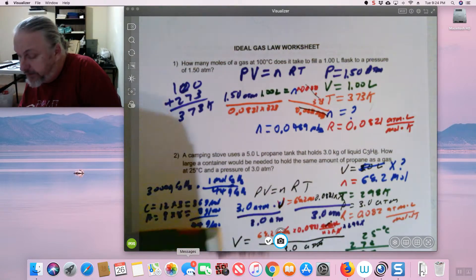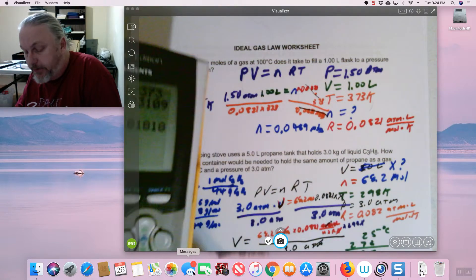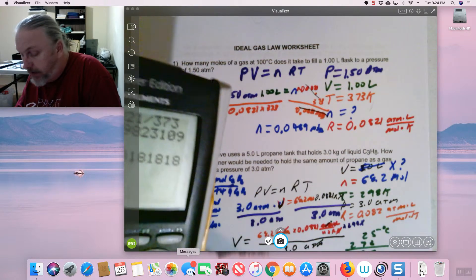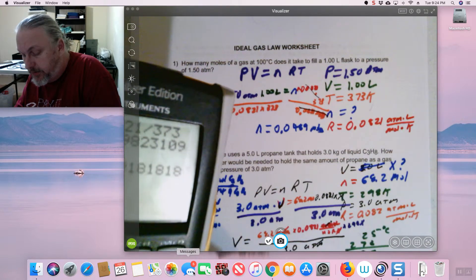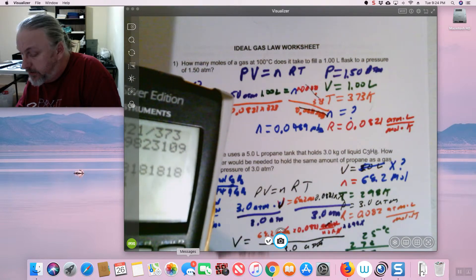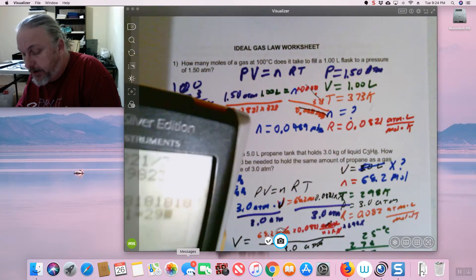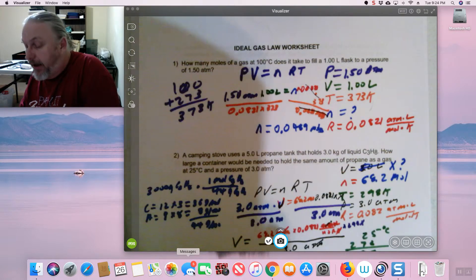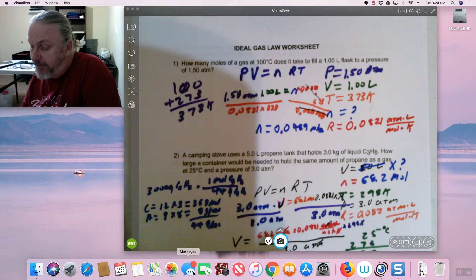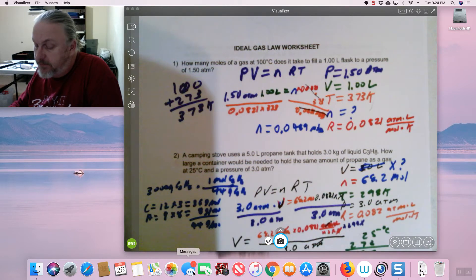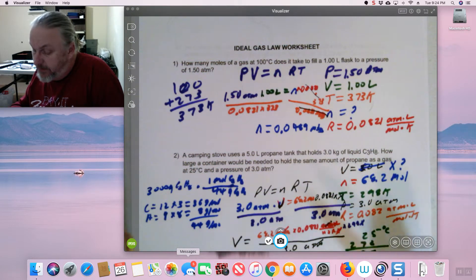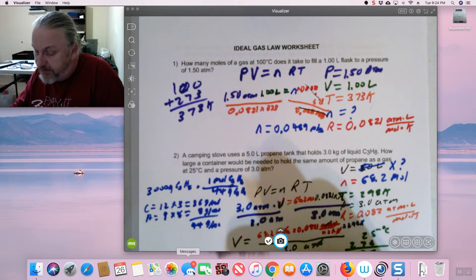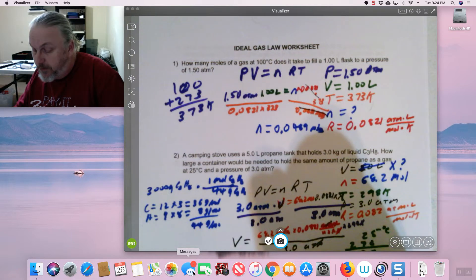So let's do our calculation. We'll clear it out. 68.2 times 0.0821 times 298 divided by 3. And I get 556 liters of gas. So my volume would be 556 liters.